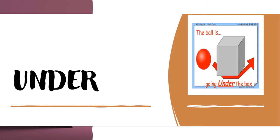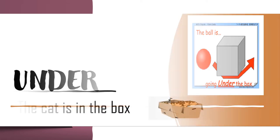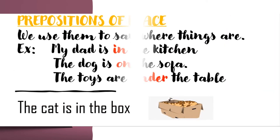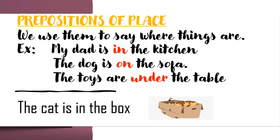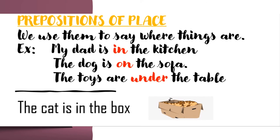'Under' can also be a preposition of place. Prepositions of place say where things are. Look at this picture — the cat is in the box. The preposition of place here is 'in'.